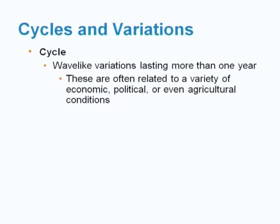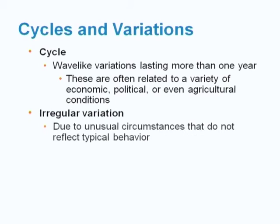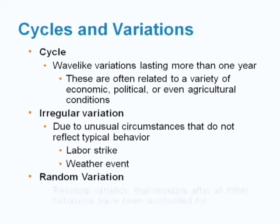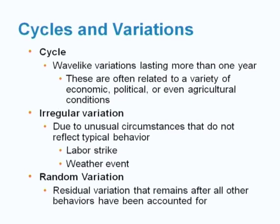Cycle is a wave-like variation lasting more than one year, often related to a variety of economic, political, or agricultural conditions. Irregular variation is due to unusual circumstances that do not reflect typical behavior, such as a labor strike or a weather event. Random variation is the residual variation that remains after all other behaviors have been accounted for.